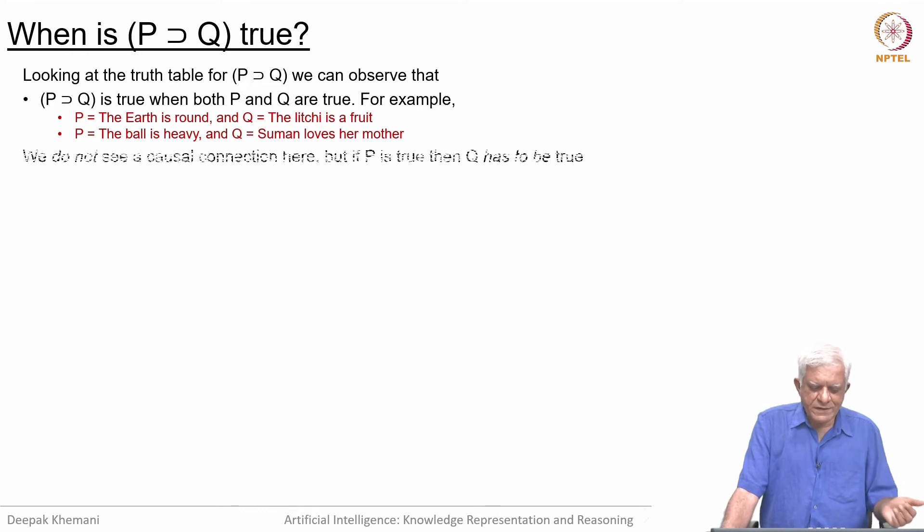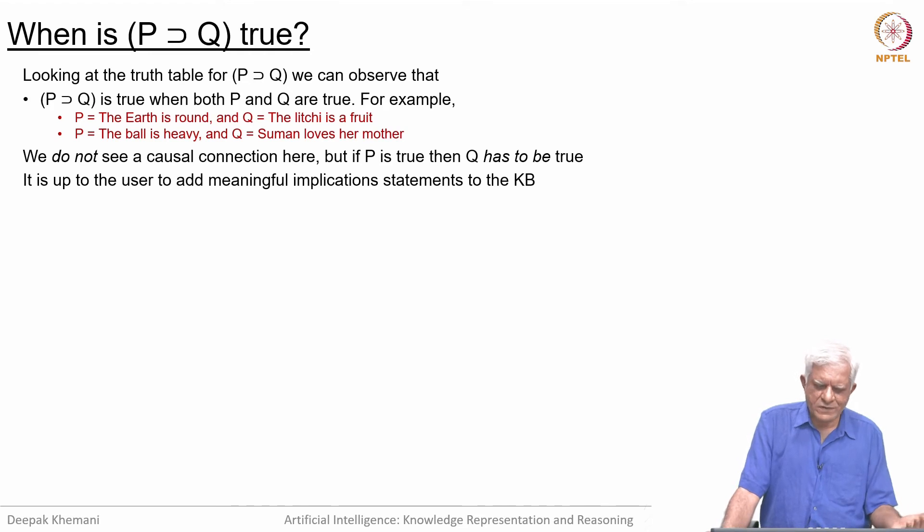But as I said, we do not see a causal connection here between P and Q. It is not that because the ball is heavy that one loves her mother. Logically, we are saying that if P is true, then Q has to be true. Clearly it is up to us users to input meaningful implication statements into our logic, because if you just take arbitrary two things which are true and then connect them up with the implication, it does not help us very much.